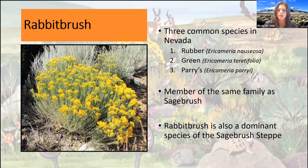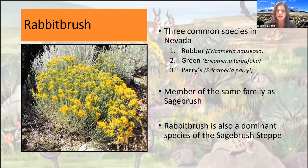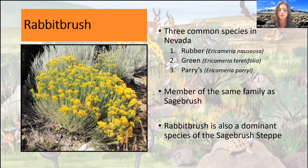Rabbit brush is also a dominant species of the sagebrush steppe alongside sagebrush. It establishes quickly and does pretty well in disturbed areas. Because of the amount of flowers it provides and the amount of leaves it has, it's actually a really nutritious plant — it provides a lot of leaf litter on the ground, which other plant species use to their benefit.